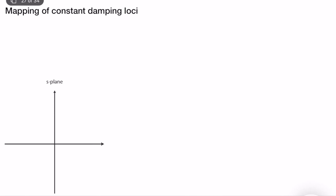In this video I will talk about mapping between Z and S-planes. We want to figure out how we can map a constant damping loci or a constant damping line from the S-plane to the Z-plane. In the S-plane we can write our pole location as sigma plus j omega. When damping is constant we can introduce the coefficient zeta omega_n plus j omega_n times sqrt(1 minus zeta squared).